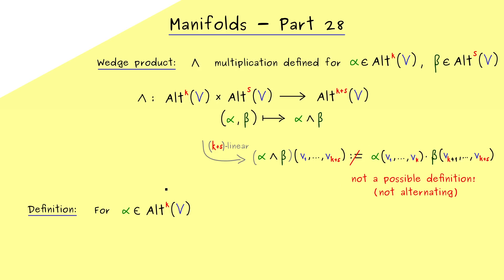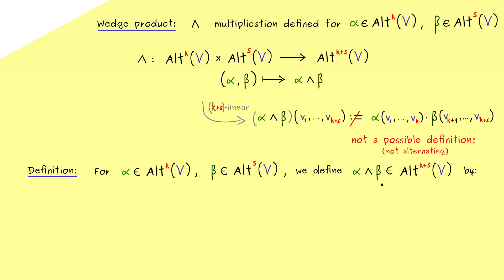This means that we have to sum up some of the combinations we get from these products here. Okay, then I would say, let's write this down for an alternating k-form alpha and for an alternating s-form beta. And then as before, we will define the new form alpha wedge beta. Moreover, we already know we have to put in k+s vectors and then we have to combine alpha and beta with permutations of these vectors.